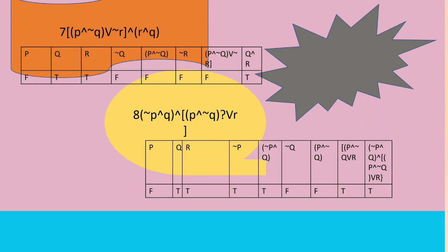For number 8, P is false, Q is true, and R is true. The negation of P is true. In the fifth column, we determine negation of P and Q is true. Then negation Q is false. P and not Q is false, and P and not Q or R is true based on the truth table. This makes the statement true.